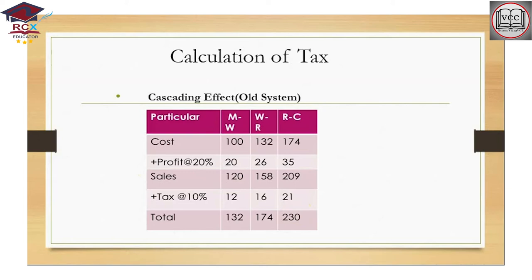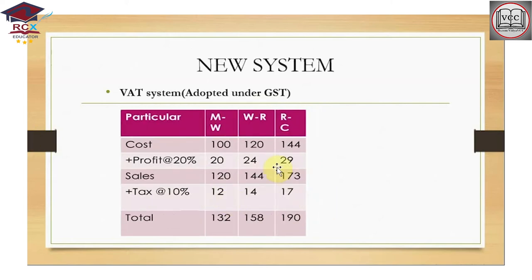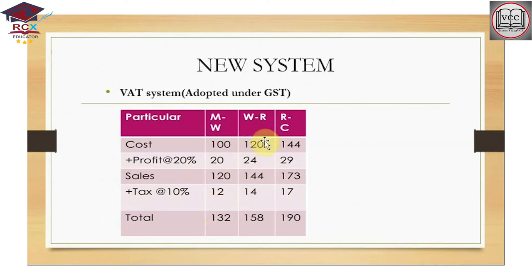Now coming to the new system — the VAT system, value added taxation system, which is adopted by GST. Same cost 100, profit 20%, sales price 120, tax again 10% = 12. But now when the wholesaler sells to the retailer, the cost picked up is only 120, not 132. The 12 rupees of tax is not added as cost, so tax on tax does not apply — no double taxation, no double benefit to the government.